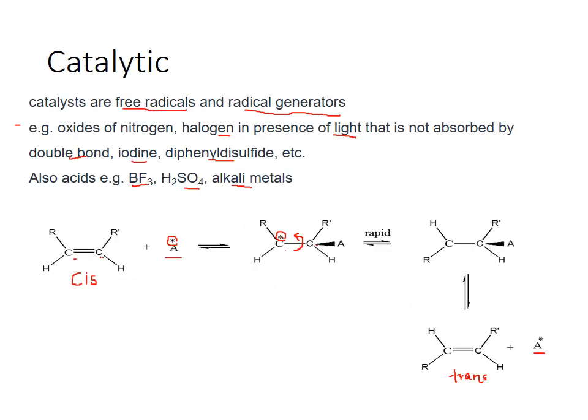Another method is by using catalysts. The catalysts used will be either free radicals or radical generators. Some examples are oxides of nitrogen, and halogens in the presence of light — in the presence of light, halogens can generate free radicals. This light should not be absorbed by the double bond; it should be absorbed by the halogens only so the corresponding free radicals are formed. Iodine disulfide and others can also act as catalysts. In addition, BF3, H2SO4, and alkali metals can also act as catalysts in some cases.